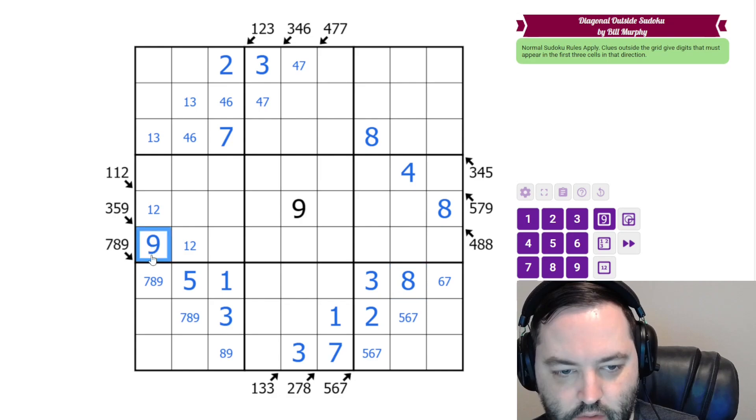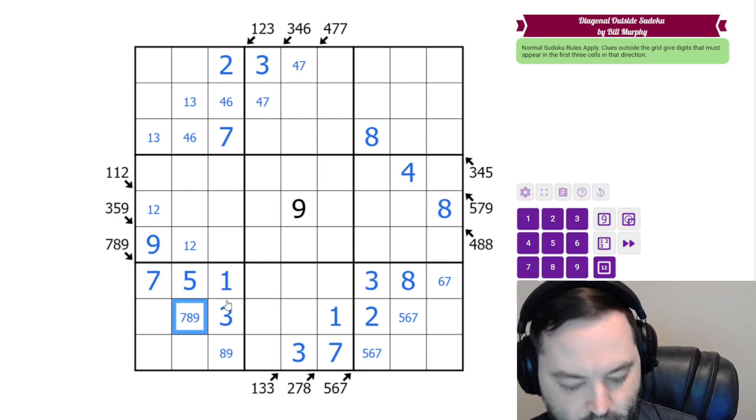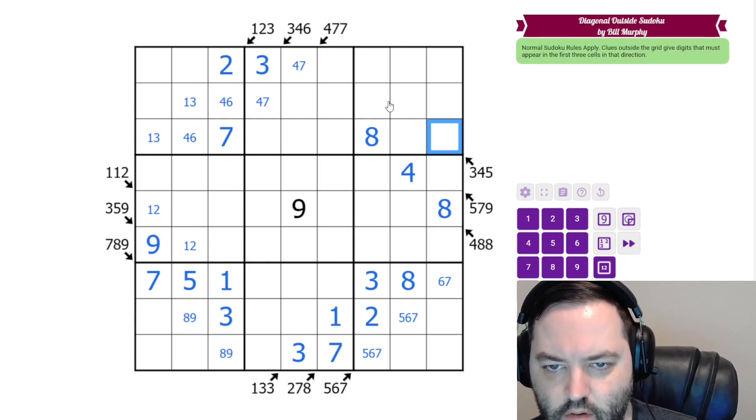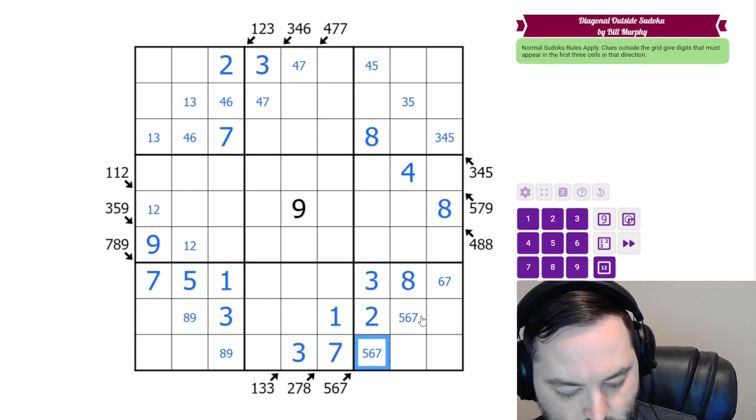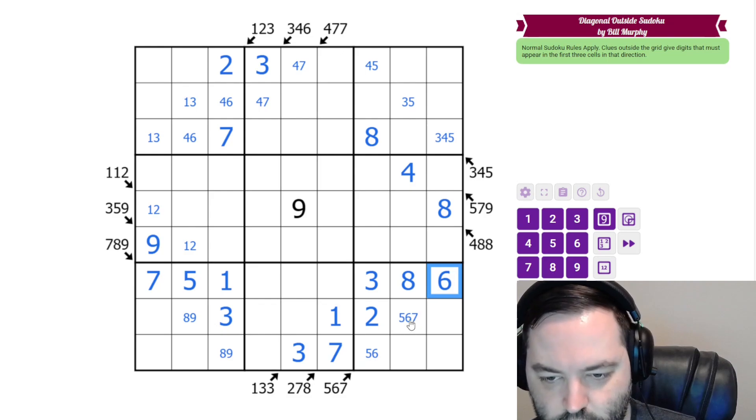This now can't be 8 or 9, so this is 7. These are 3, 4, and 5. This can't be 3. This can't be 4. Actually, this can't be 7 and this can't be 7. So let's bring this up here: 5, 7.